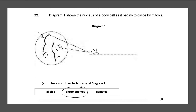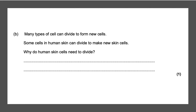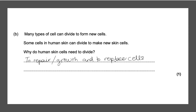You would write chromosomes on the diagram, and that gives you your one mark. Next question: many types of cell can divide to form new cells. Some cells in human skin can divide to make new skin cells. Why do human skin cells need to divide? They need to divide to repair, for growth, and to replace cells. Any one of those three answers gives you your one mark.